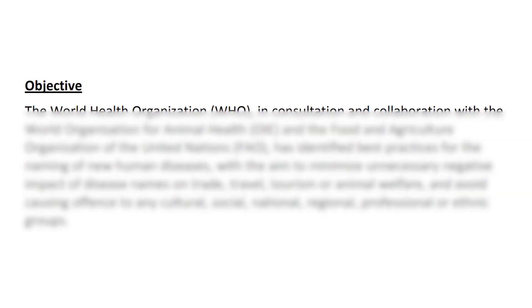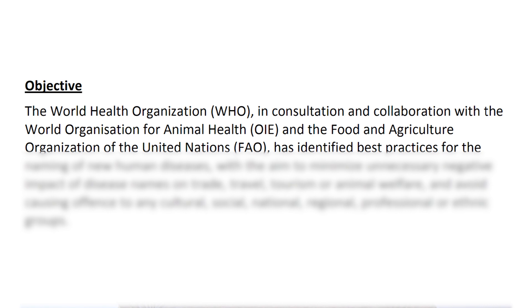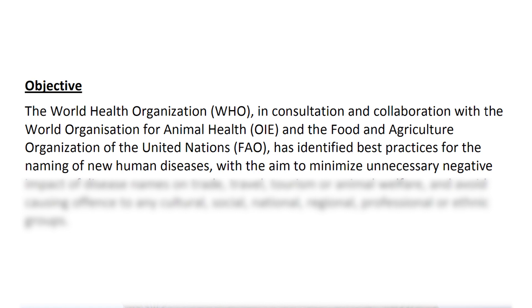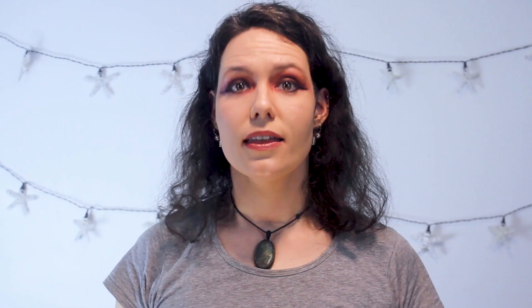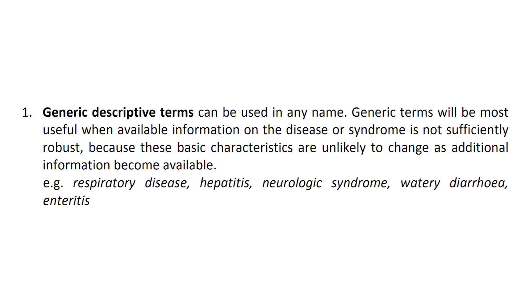In a document I've linked below, it says: The World Health Organization, in consultation and collaboration with the World Organization for Animal Health and the Food and Agriculture Organization of the United Nations, has identified best practices for the naming of new human diseases with the aim to minimize unnecessary negative impacts of disease names on trade, travel, tourism, or animal welfare, and avoid causing offense to any cultural, social, national, regional, professional, or ethnic groups. The guidelines say that in the naming of a disease it should use generic descriptive terms such as respiratory disease, hepatitis, neurologic syndrome, watery diarrhea, enteritis, etc., because when more information becomes available, these basic terms are unlikely to change.